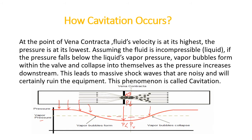Similar things that we are discussing in respect to the control valve also happen for pumps. If you know this concept, the pump topic will be easier for you. Ultimately, the reduction of pressure below the vapor pressure and the subsequent recovery results in bubble formation and bubble collapsing. In this process, shockwaves are generated which damage the equipment and pipes — this phenomenon is called cavitation.